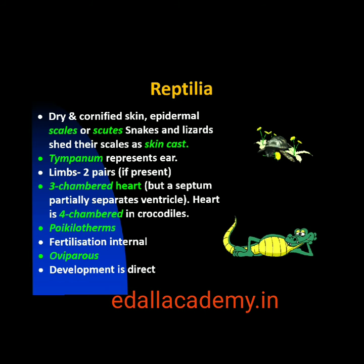Fifth is class Reptilia. The class name refers to their creeping or crawling mode of locomotion — Latin 'repere', to creep or crawl. They are mostly terrestrial animals and their body is covered by dry and cornified skin with epidermal scales or scutes. They do not have external ear openings; tympanum represents the ear. Limbs, when present, are two pairs. Heart is usually three-chambered, but four-chambered in crocodiles. Reptiles are poikilotherms. Snakes and lizards shed their scales as skin cast. Sexes are separate. Fertilization is internal. They are oviparous and development is direct.